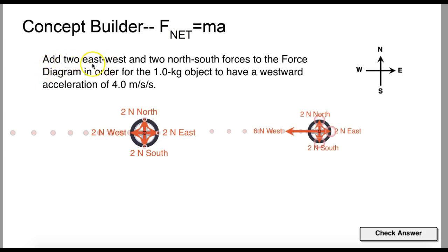So they want us to add two east-west and two north-south forces to the Force Diagram in order for the 1.0-kg object to have a westward acceleration of 4.0 m/s².